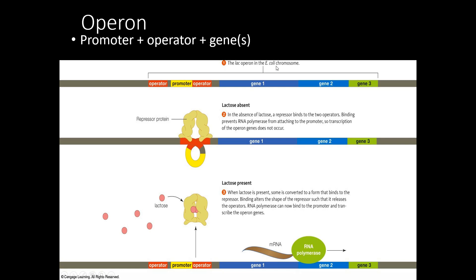E. coli is a bacterial species that lives in your large intestine. If you've had milk recently, the E. coli in your large intestine has had milk too. They turn on genes that allow them to make enzymes to digest the lactose in milk and use it as an energy source. However, they don't want to make that enzyme if there's no milk available — it costs energy to make any enzyme, so why make it if you're not going to use it? If you have not had milk recently, the E. coli in your gut will turn off that gene and stop making those enzymes, because there's no point making them if lactose isn't available. This operon allows them to regulate their metabolism based on what's available in your diet.